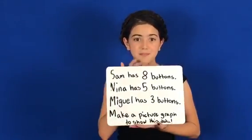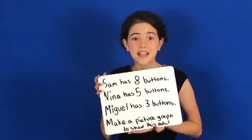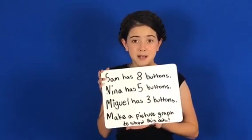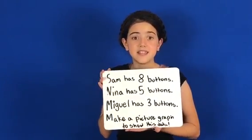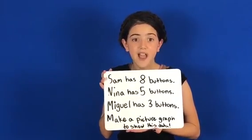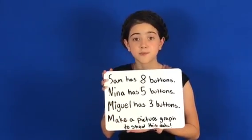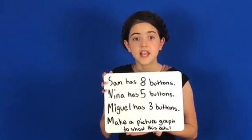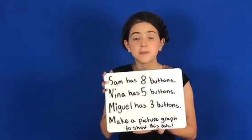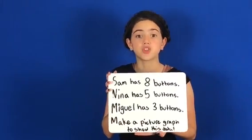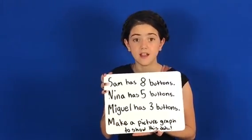So here's the problem. Sam has eight buttons. Nina has five buttons. Miguel has three buttons. I need you to make a picture graph to show this data.